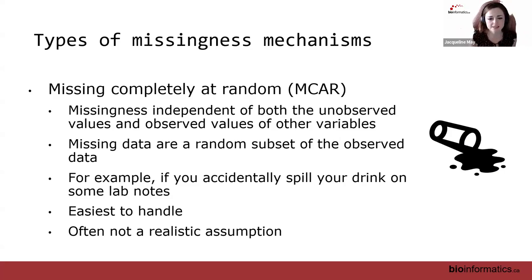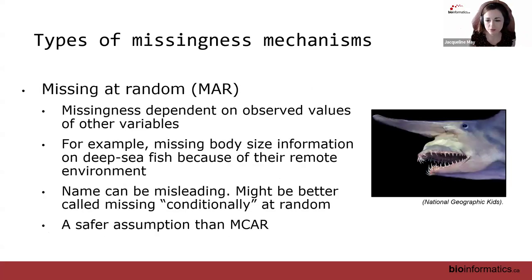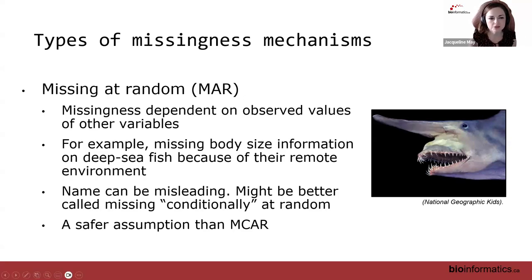For example, if you accidentally spill your drink on some lab notes or randomly lose them, that's missing completely at random. This is the easiest case to handle, but unfortunately it's often not realistic. Then we have missing at random, which is the second easiest. This is when missingness is dependent on observed values of other variables.